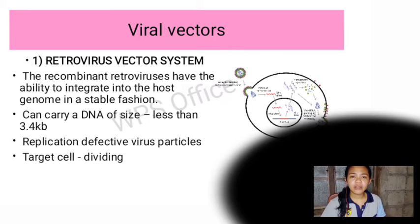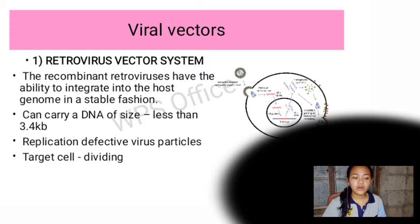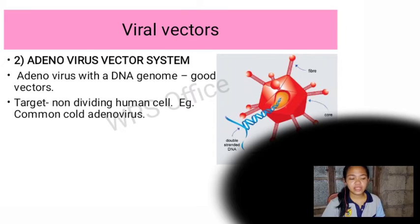The first viral vector is the retrovirus vector system. Recombinant retroviruses have the ability to integrate into the host genome in a stable fashion. They can carry a DNA size of less than 3.4 kb, produce replication-defective virus particles, and can target dividing cells.